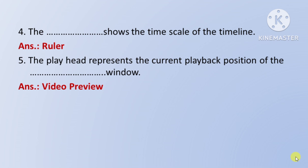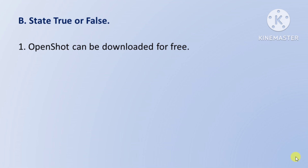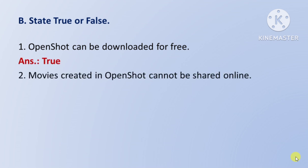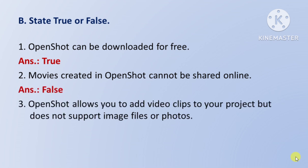Video Preview Window. See True or False. First question: OpenShot can be downloaded for free — means OpenShot ko hum free mein download kar sakti hai — so it's True. Next question: movies created in OpenShot cannot be shared online — means jo movies hum OpenShot mein create karenge unhe online share nahi kar sakti hai — this is False, kyunki share kar sakti hai. Next question: OpenShot allows you to add video clips to your project but does not support image files or photos — means OpenShot...